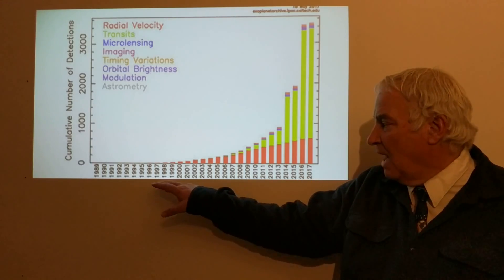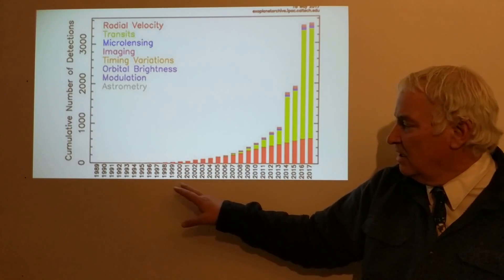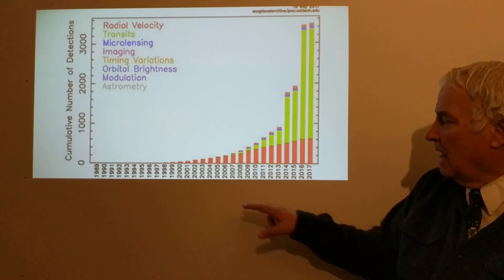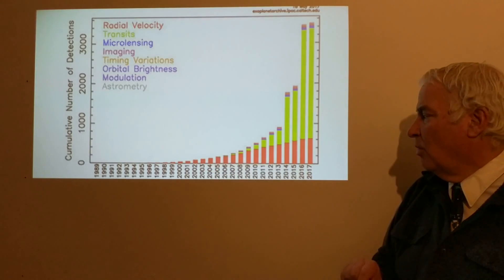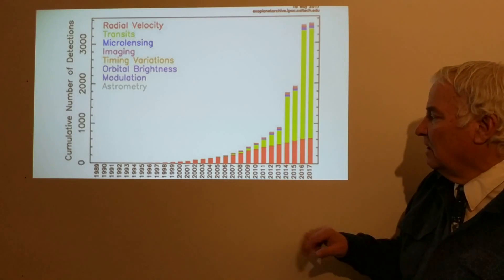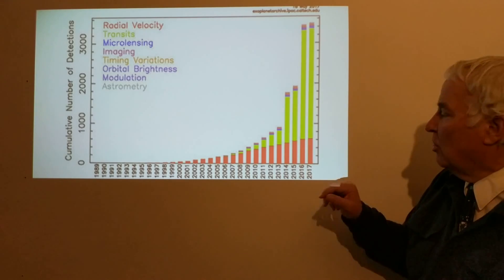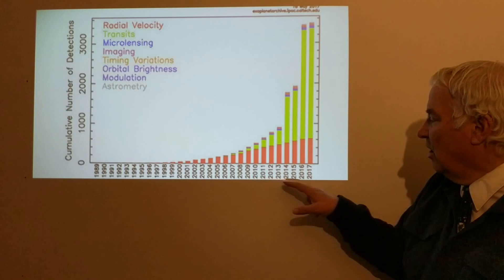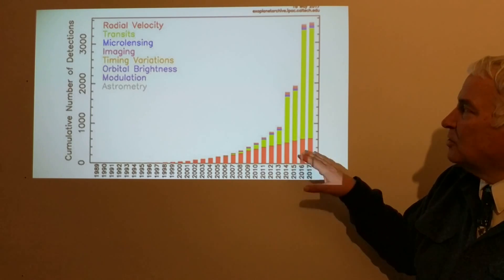Following that, a smattering of discoveries using the radial velocity method, which is in red here. This is the year 2000 with a few discoveries, and then it starts to increase as the radial velocity method becomes a tried-and-true method discovering more and more exoplanets. Another method called the transit method has basically taken over and provided thousands of discoveries per year in the 2010s, the 20-teens here, starting from about 10 in 2010 up to 2017 and beyond.